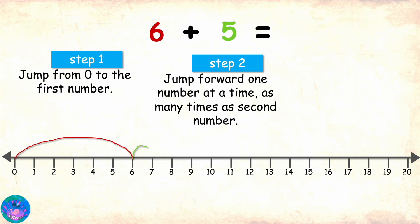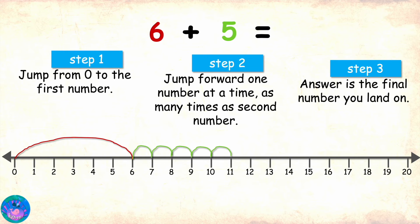So, here we go. 1, 2, 3, 4 and 5. Step 3 is to note the number we have landed on as that is the final answer. We landed on 11. So, 6 plus 5 equals 11.